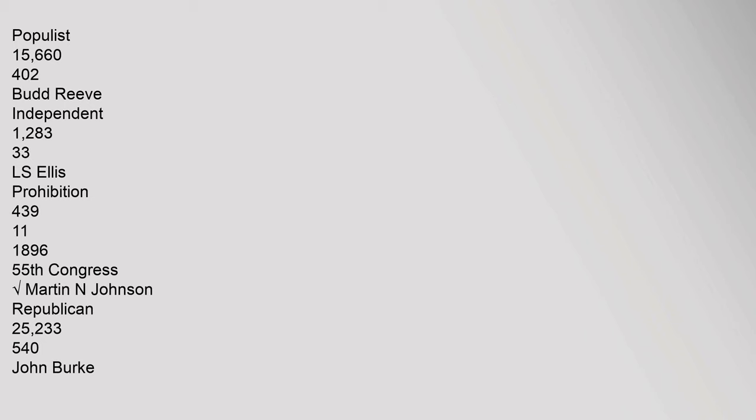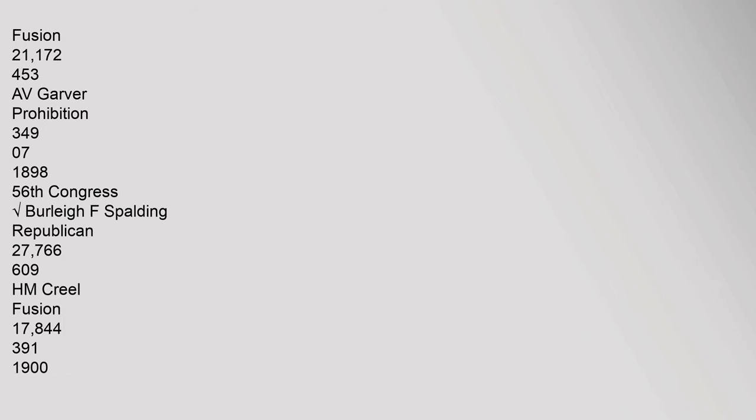1896 (55th Congress) — Martin N. Johnson, Republican: 25,233 (54%); John Burke, Fusion: 21,172 (45%); A.V. Garver, Prohibition: 349. 1898 (56th Congress) — Burley F. Spaulding, Republican: 27,766 (60.9%); H.M. Creel, Fusion: 17,844 (39.1%).